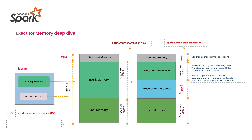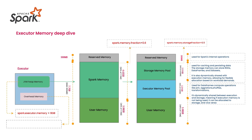The Executor Memory Pool is used for DataFrame compute operations like joins, aggregations, shuffles, and transformations. It's dynamically shared with storage — if execution memory is not being used, it can be allocated to storage, and vice versa. Think of it like two friends sharing money based on need. If both pools are in a critical situation simultaneously, it leads to an executor out-of-memory exception.